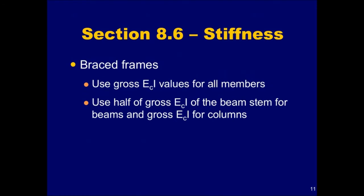In braced frames, it is common to use one of two sets of assumptions. In the first set, the gross flexural stiffness values are used for all the members. In the second set, the gross flexural stiffness is still used for the columns, but for beams, half the gross flexural stiffness of the beam stem is used.